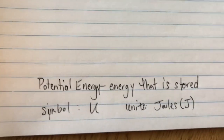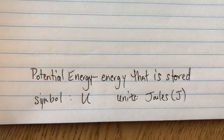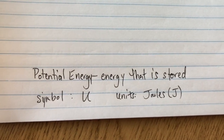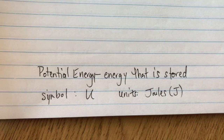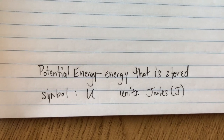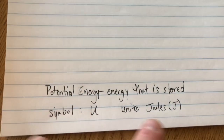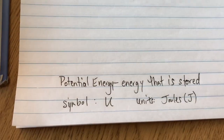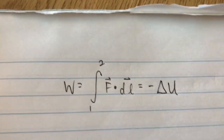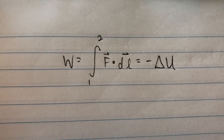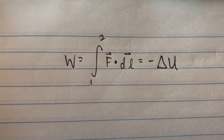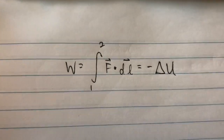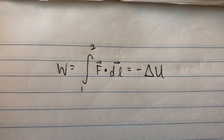Now that we're caught up on the difference between conservative and non-conservative, we can talk about potential energy. The basic idea is energy that has yet to be released, or energy that is stored. The symbol we use is capital U, and it's measured in joules just like other energy forms. The key equation: work equals the integral of the dot product of the total force and displacement, which equals the negative of the change in potential energy.